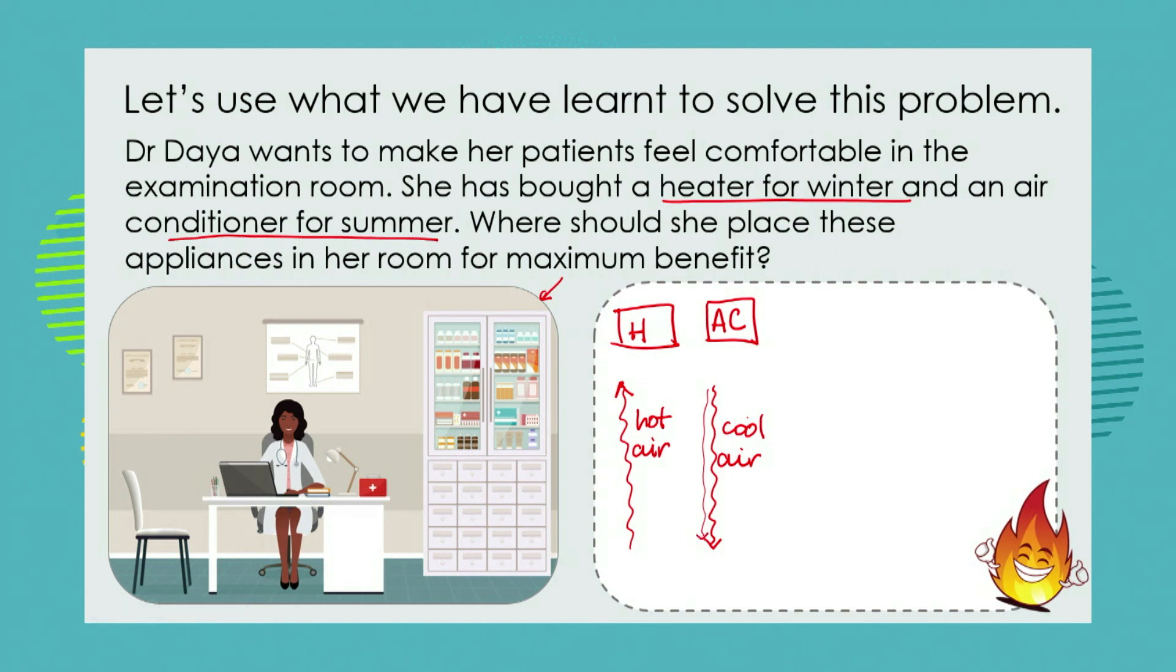So where should we put the heater? Should we put the heater up here on her wall, high up near the ceiling? Or should we place the heater on the floor? Likewise for our air conditioner. Should we place our air conditioner high up or on the floor? Well our heater is going to be producing hot air which is going to rise and flow around the room in convection currents. On the other hand our air conditioner is going to produce cold air which is going to fall and move around in convection currents. So we place the air conditioner at the top near the ceiling and the heater at the bottom near the floor.